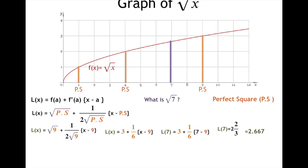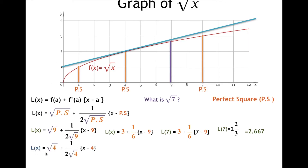Now we will use 4, because 4 and 9 are the two closest perfect squares to 7. The blue line will help us find the square root of 4. As we go up, the square root of 4 is 2. So L(x) = √4 + 1/(2√4) · (x − 4).